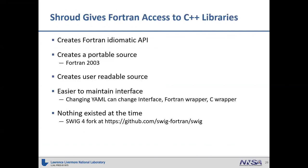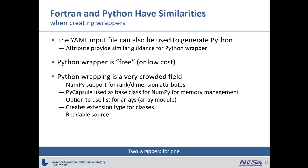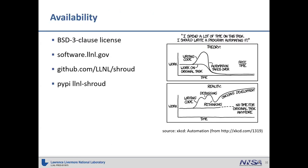Shroud gives you a Fortran interface to C++ libraries. It creates an idiomatic API so you don't know you're calling C++. It generates portable, readable source code. Nothing existed at the time like this, but there's now a fork of SWIG that will generate Fortran. Since you have all that metadata, you can also generate Python wrappers. The array support is what sets it apart. It's available now under a BSD license. The software is on software.llnl.gov, on GitHub, and on PyPI since Shroud is written in Python.